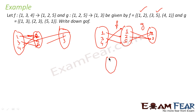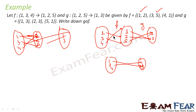To find g∘f, just merge the two functions. For input 1: f(1)=2, then g(2)=3, so 1→3. For input 3: f(3)=5, then g(5)=1, so 3→1. For input 4: f(4)=1, then g(1)=3, so 4→3. This is my g∘f.